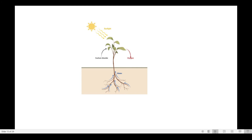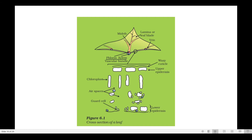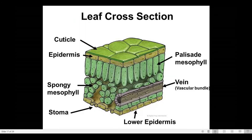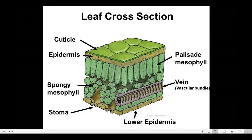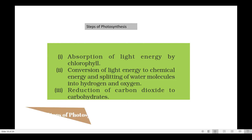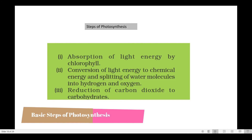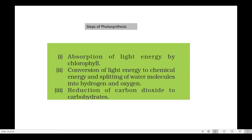This is the leaf structure diagram from the NCERT textbook. A waxy cuticle is present on top, followed by the upper epidermis. Below that are the columnar palisade parenchyma cells containing chloroplasts, and there are air spaces between cells. In the lower epidermis, stomata are present — the minute pores through which transpiration and gas exchange of oxygen and carbon dioxide take place. Chlorophyll absorbs light energy, converts it to chemical energy, and splits water molecules into hydrogen and oxygen in a process called photolysis. In the dark phase, reduction of carbon dioxide to carbohydrate occurs through the Calvin cycle.